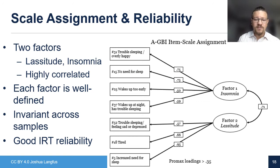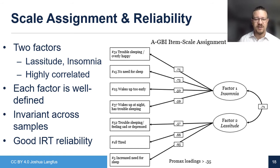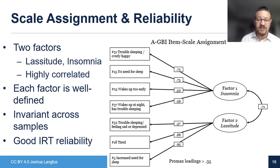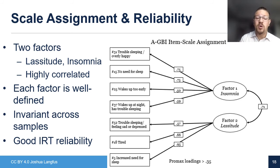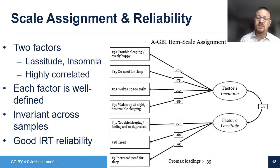For the Adolescent General Behavior Inventory, two factors emerged: a lassitude factor and an insomnia factor. Lassitude related to feeling tired, having increased need for sleep, and having trouble sleeping because of feeling sad or depressed. The insomnia factor included trouble sleeping because of being overly happy, having no need for sleep, waking up too early, or waking up at night. These factors were pretty highly correlated with one another, showed good invariance across both samples, and had fairly wide-ranging reliability — reliably measuring sleep problems from just below average up through about two standard deviations above average.